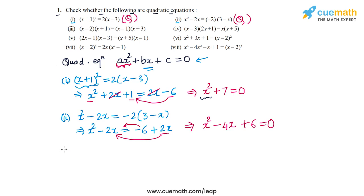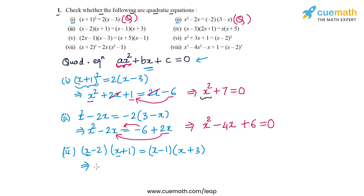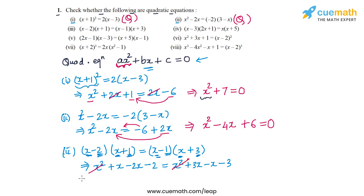In Part 3 the equation is (x − 2)(x + 1) = (x − 1)(x + 3). Expanding the left side: x² + x − 2x − 2. Expanding the right side: x² + 3x − x − 3. The x² terms on both sides cancel out, leaving −x − 2 = 2x − 3.